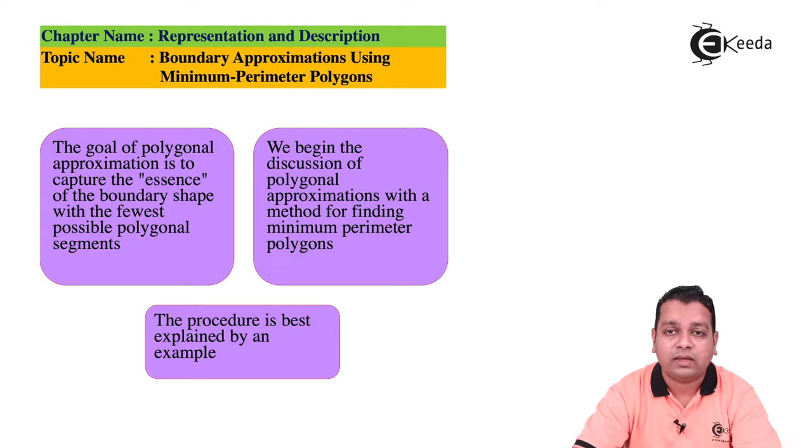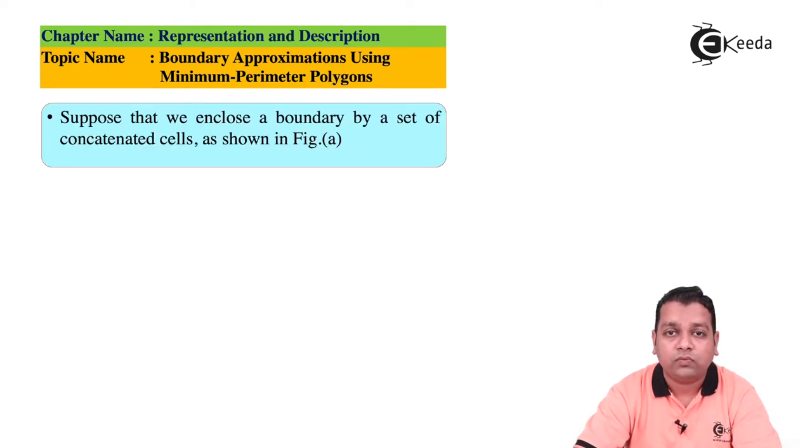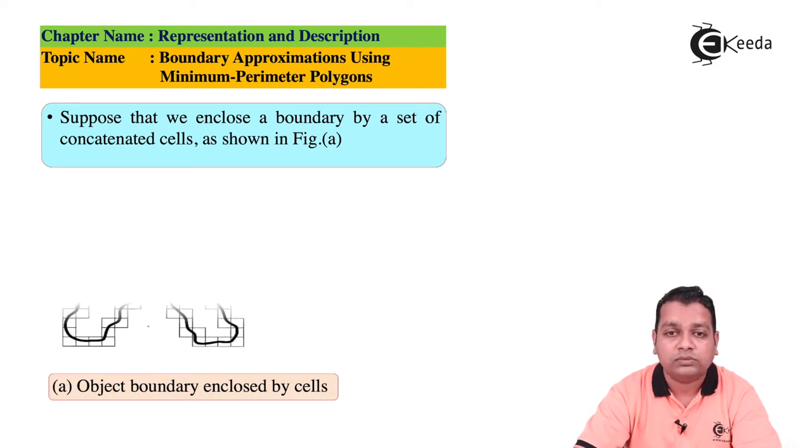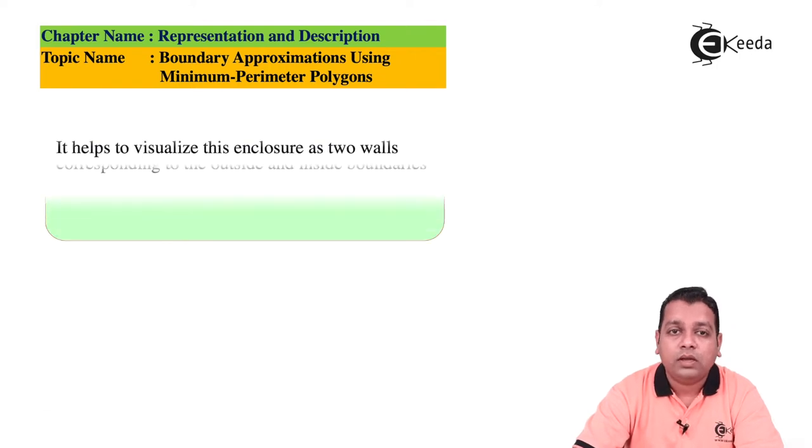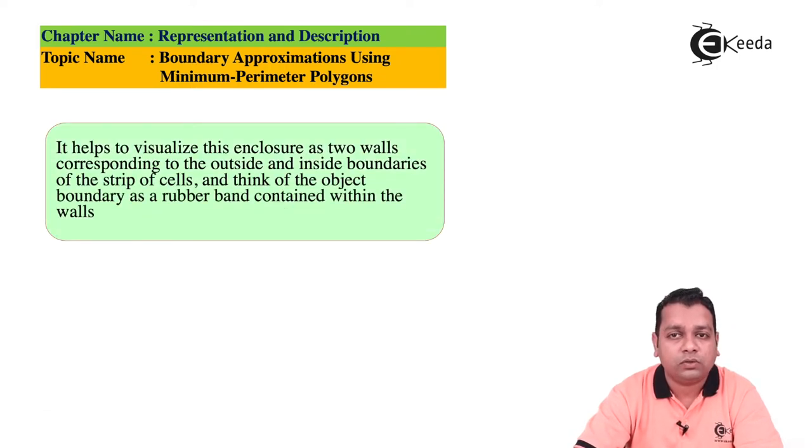This procedure is best explained by example. Suppose we enclose a boundary by a set of concatenated cells, as shown in Figure (a). The diagram shows adjacent cells attached side by side with respect to the boundary. This helps us visualize the enclosure as two walls corresponding to the outside and inside boundaries of the strip of cells.